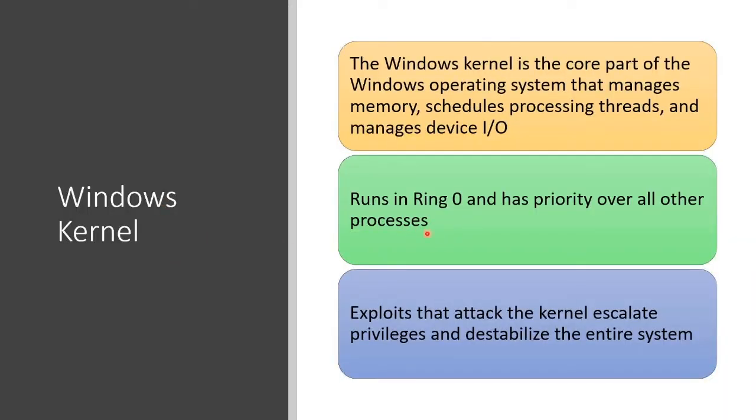Around Ring Zero is Ring One — it's kind of like a bullseye: Ring Zero, One, Two, Three. Ring Zero is where the kernel goes. Ring One is where core system services go. Ring Two is where device drivers go. Ring Three is where user applications go — that's the least privileged. So Ring Zero runs the Windows kernel and has priority over everything else. If you have an exploit that attacks the kernel, you can escalate privileges and destabilize the entire system. You will get system privilege, but you may very well crash the whole system.